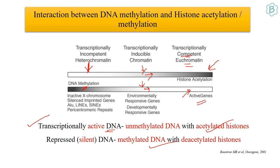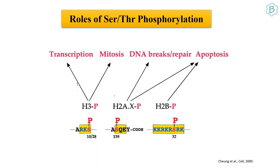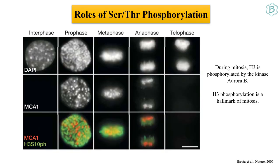Other modifications include serine/threonine phosphorylation, which plays a role in transcription, mitosis, DNA break repair, and apoptosis. H3 phosphorylation by the kinase Aurora B is a hallmark of mitosis — H3 S10 phosphorylation is visible only during mitosis, as shown by green immunofluorescence staining.